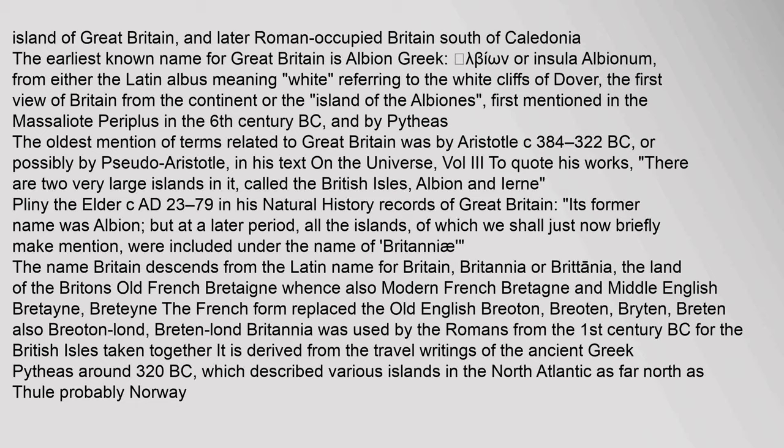The earliest known name for Great Britain is Albion — Greek: Albion or Insula Albionum — from either the Latin albus meaning 'white,' referring to the white cliffs of Dover, the first view of Britain from the continent, or 'the island of the Albionese,' first mentioned in the Massaliote periplus in the 6th century BC and by Pythias. The oldest mention of terms related to Great Britain was by Aristotle (c. 384–322 BC), or possibly pseudo-Aristotle, in his text on the universe, volume 3.